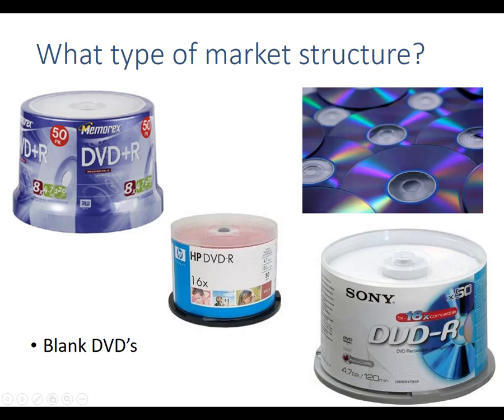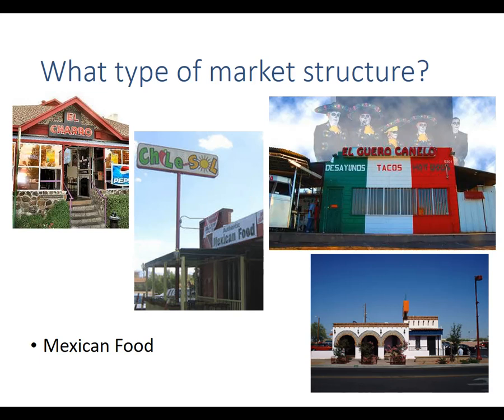First: blank DVDs. The answer is perfect competition — we've got an identical product, pretty close to the same price, you could start your own firm, and you'd have to take whatever price all the other competitors are charging. Next: Mexican food. These are some Mexican food places here in Tucson — they're all selling tacos, burritos, and other types of Mexican food, but at different prices and perceived different quality. Could you enter this market? Sure — lots of Mexican food restaurants open up every year, and lots of them close down. This one is monopolistic competition.